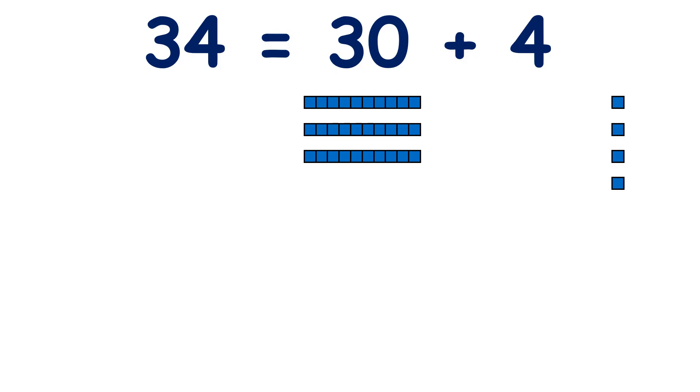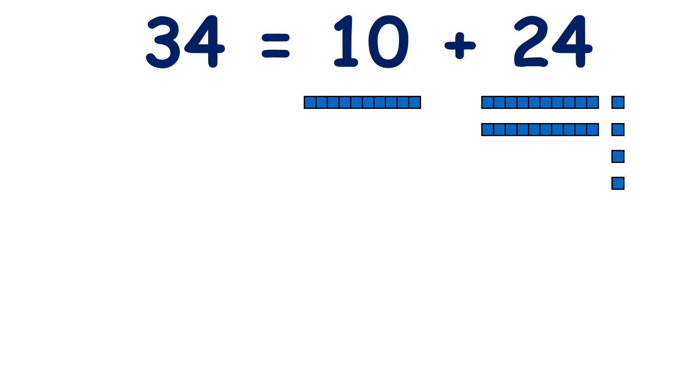But we don't have to partition into tens and units. We can partition in different ways. So we could partition into 20 and 14. We still have a total of three tens and four units, so we still have 34 altogether. Or we could have 10 and 24.